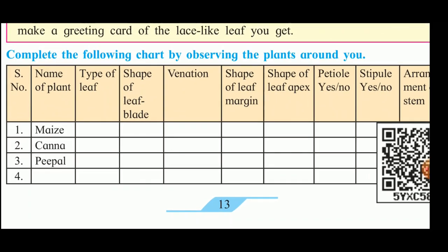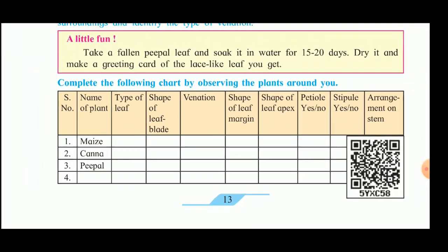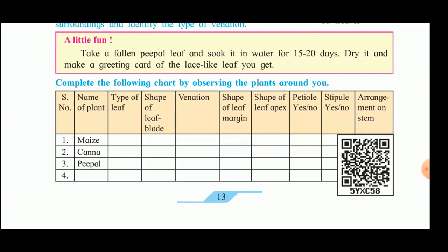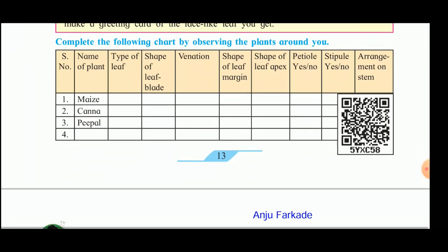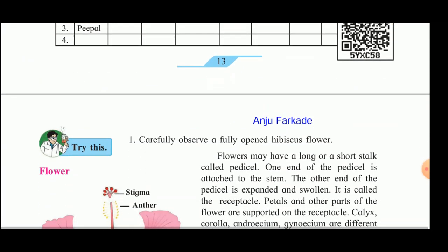Observe the maize plant - what type of leaf it is, then the shape of the leaf blade, then venation, then the shape of the leaf margin, shape of the leaf apex, where the petiole is present or not, and whether the stipule is present or not. All these things you will complete yourself, and in the next lecture I will check it.